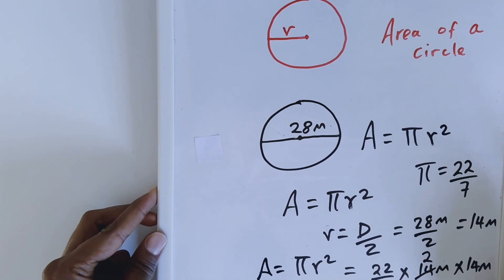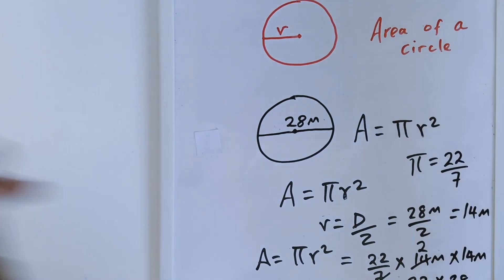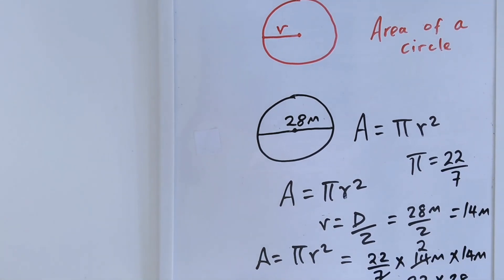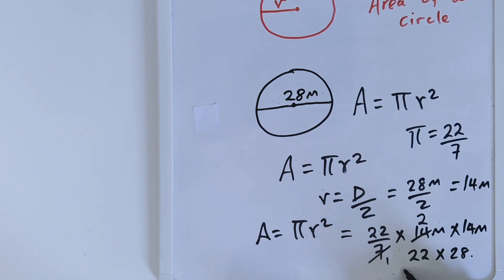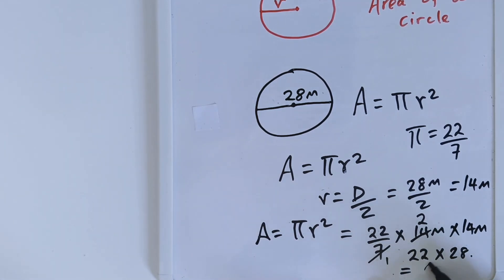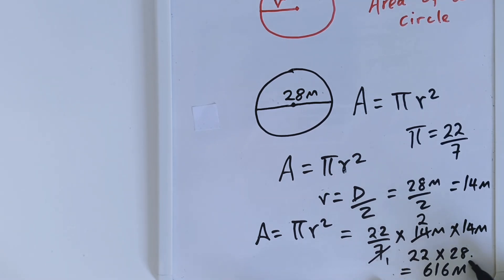When you multiply 22 times 28, this will give me 616 m squared.